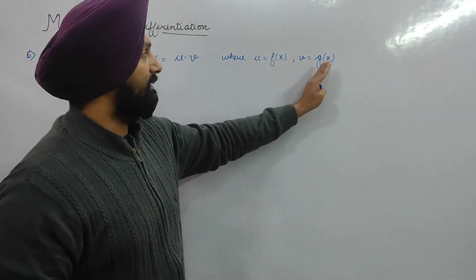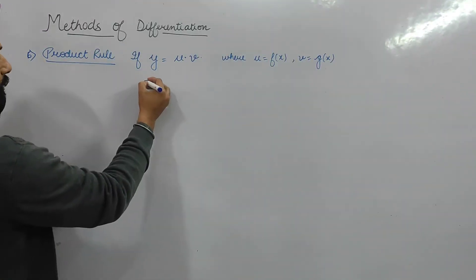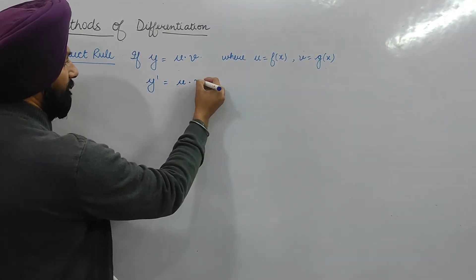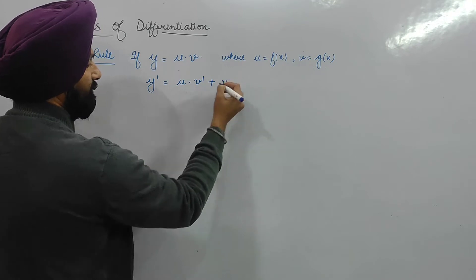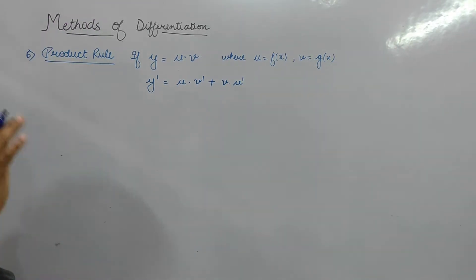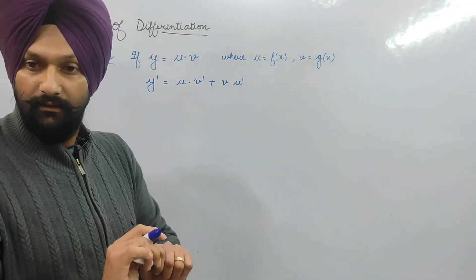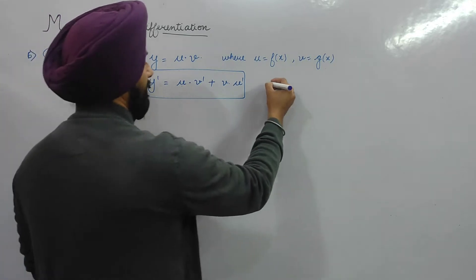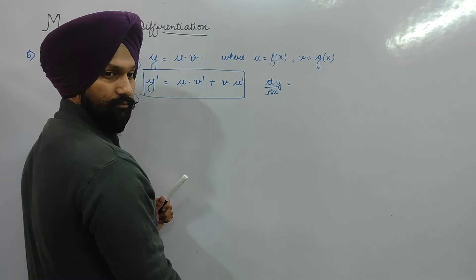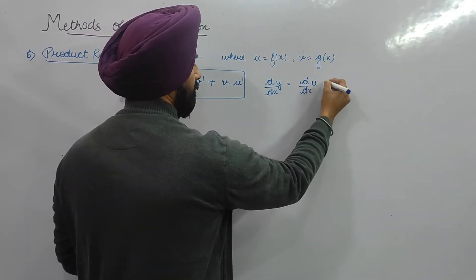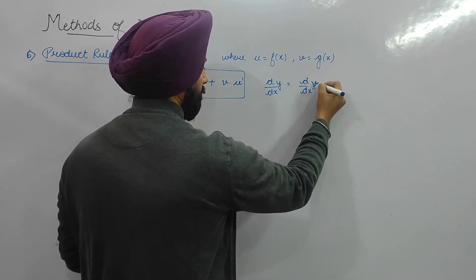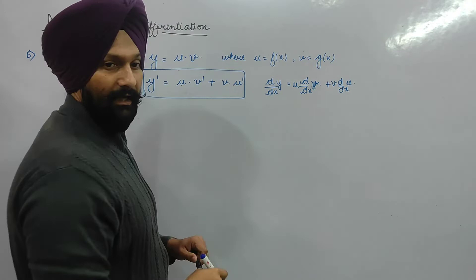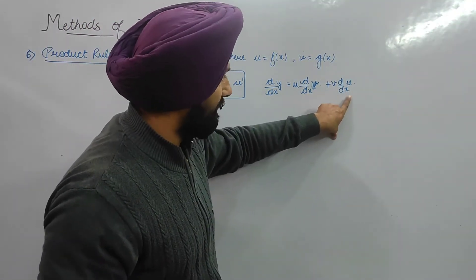I am calling the first function u and the second function v. The derivative of y is: first function u into derivative of second function, plus second function into derivative of first function. This must always be remembered as first function times derivative of second, plus second function times derivative of first.